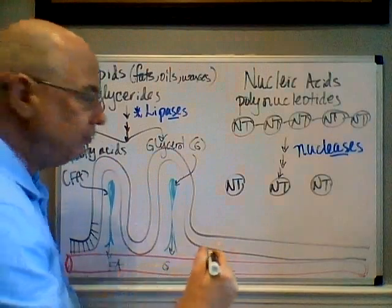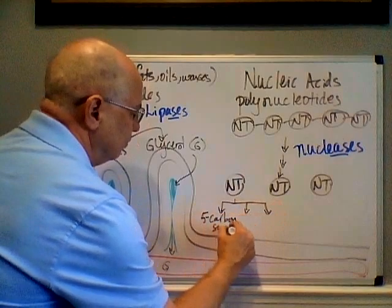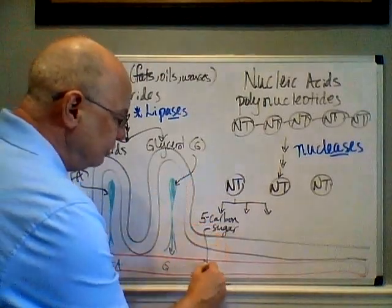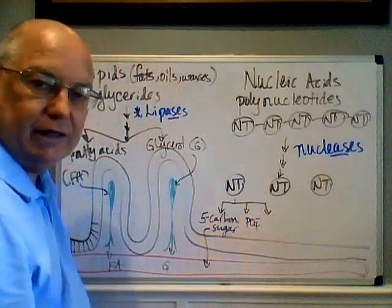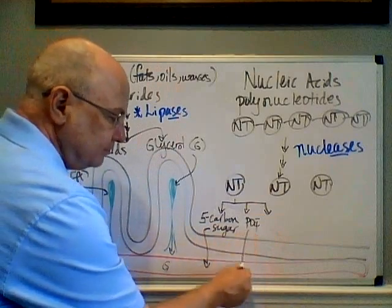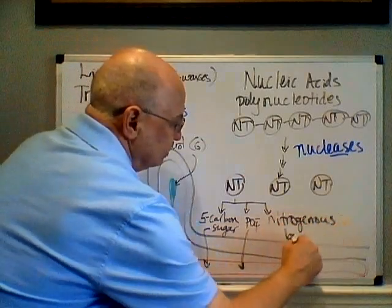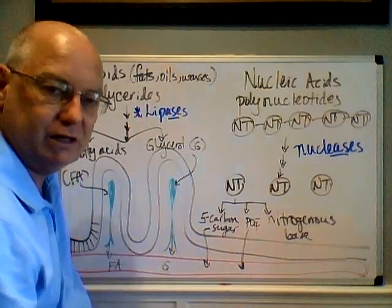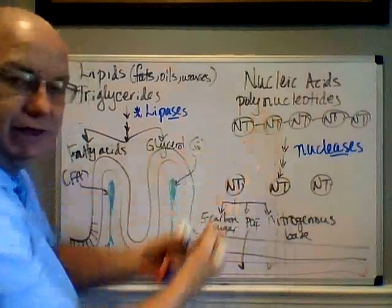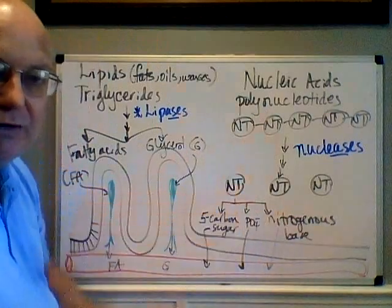The nucleotides have to be broken down into three substances. Each nucleotide is made up of: a five-carbon sugar — ribose if we're talking about RNA, deoxyribose if we're talking about DNA; a phosphate ion (PO4 negative), which is the P in ATP and GTP; and a nitrogenous base — adenine, thymine, guanine, cytosine, or uracil. We absorb each of these. We can then reassemble them into nucleotides for DNA and RNA, or use them for other things. We don't need to worry about the specific enzymes that break down nucleotides at this level.